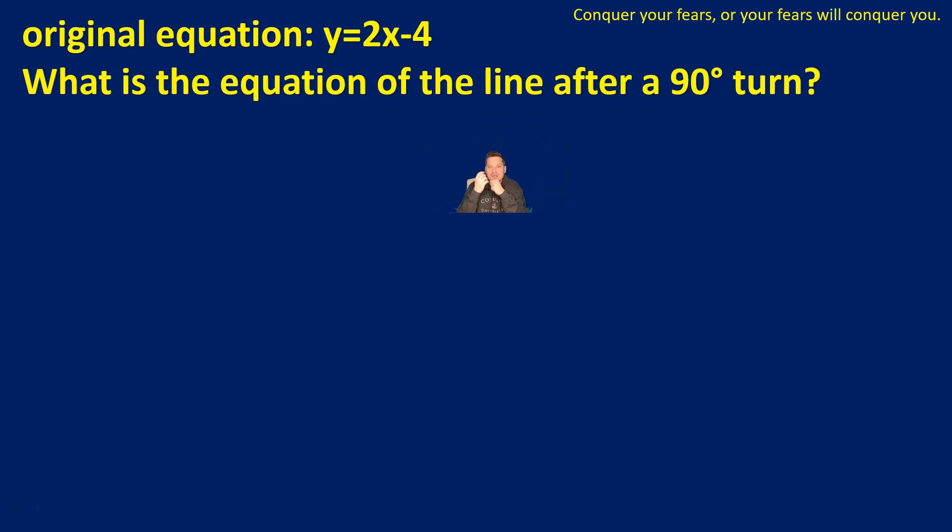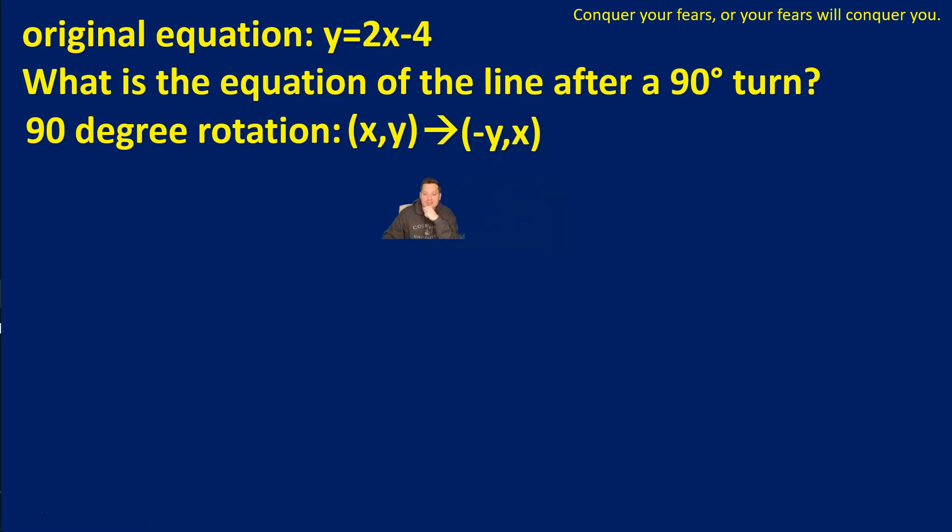First let's remind ourselves of a basic transformation that corresponds to a 90 degree turn. A 90 degree rotation means the following about the coordinates. You take the point (x, y), whatever those coordinates happen to be, and you apply the transformation that does the following: it becomes (-y, x) instead. So you interchange the role of the x and the y, and also in front of the y you put a negative sign.